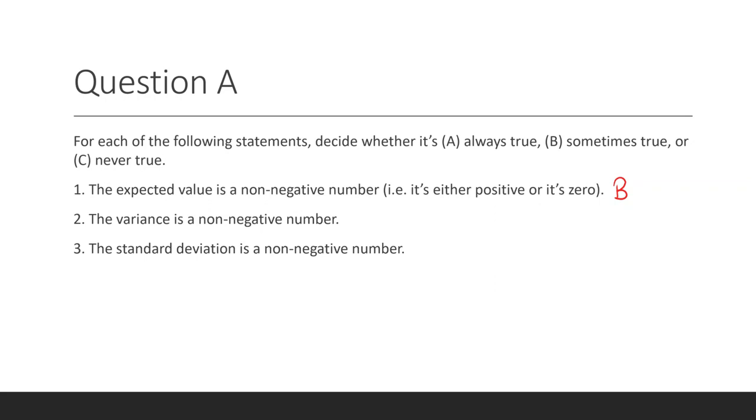Statement two: the variance is a non-negative number. This is always true, and that's because the variance is the expected value of something squared. Something squared is always non-negative. It can never be negative.